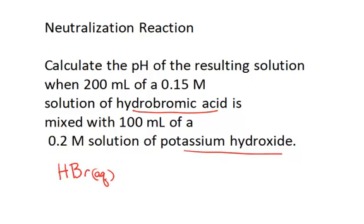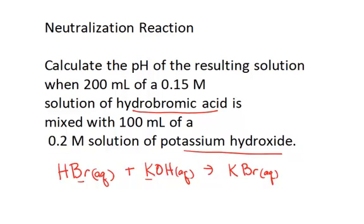It's an aqueous solution of HBr plus an aqueous solution of potassium hydroxide. They're mixed together, and the result of an acid-base neutralization reaction is that you produce a salt — in this case, the cation of the base and the anion of the acid, which would be potassium bromide. Potassium has a plus one charge, bromide has a minus one charge, so it's a one-to-one ratio. It's a soluble salt dissolved in water. The other product is water. The reaction has a one-to-one-to-one-to-one molar ratio.